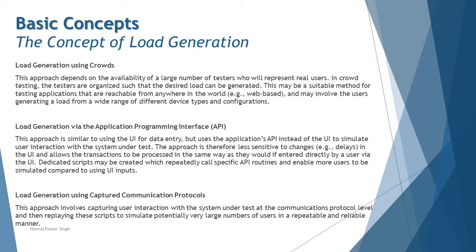Load generation via the Application Programming Interface (API) is another approach. If the UI is not stable, we can still perform performance testing at the middleware level by approaching APIs, applying load on each one, and observing the response codes and behavior. We're not just talking about API testing — we're also looking at the performance perspective: what response time did it take when the same thing is executed by multiple users simultaneously, and how does it react to that?